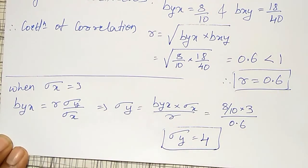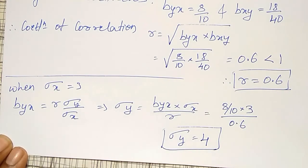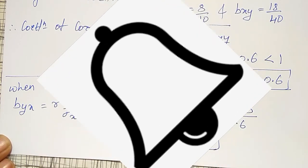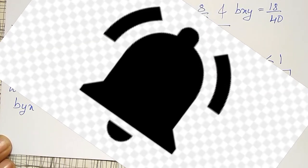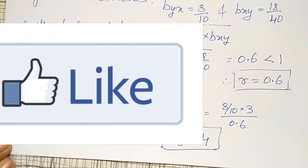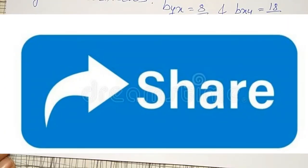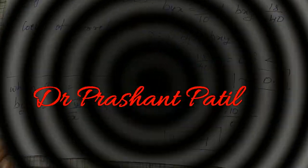Like this, we can find out the mean X bar and Y bar if the regression lines are known, and also the coefficient of correlation. Another example will be done in my next video. If you haven't subscribed to my channel, please subscribe, hit the bell icon for notifications, like, comment, and share this video. Thank you friends, bye.